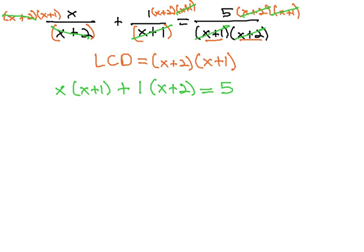We can now solve the resulting equation just as we have solved equations before. First, we will want to get rid of the parentheses by distributing through, giving us x squared plus x plus x plus 2 equals 5.